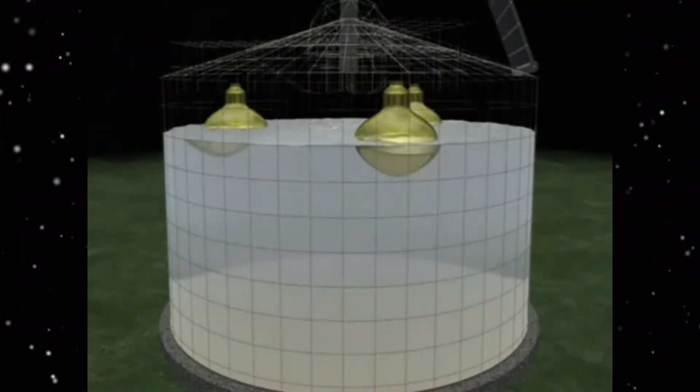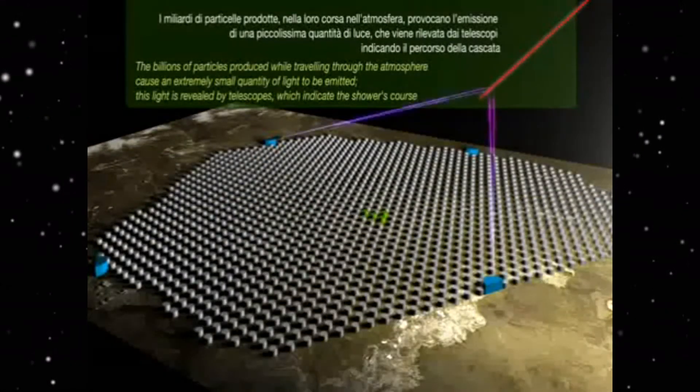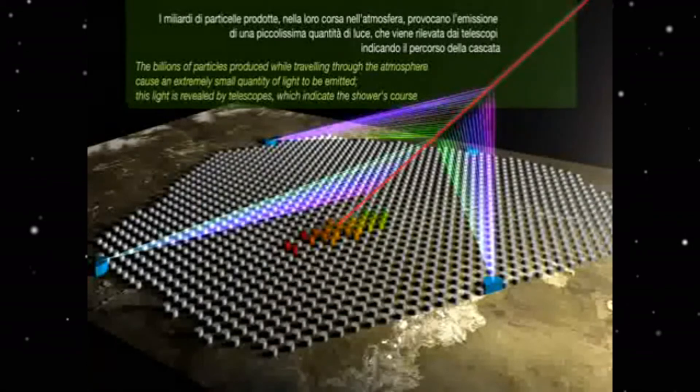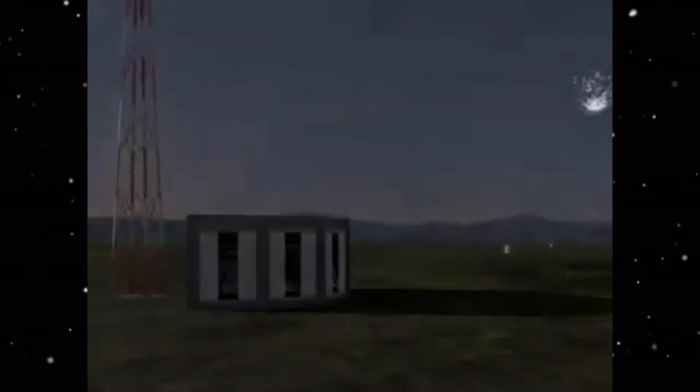The cosmic ray particles travel faster than light in water. This results in the surrounding molecules emitting blue light called Cherenkov radiation. This light is detected by photomultipliers in the tank.